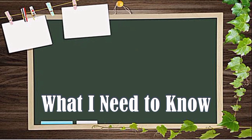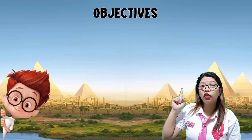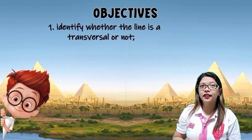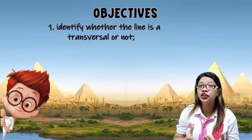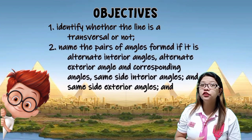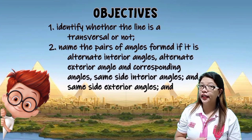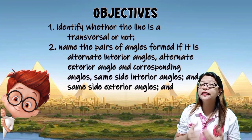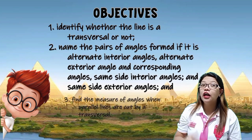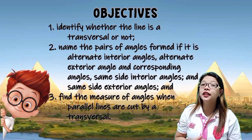What I Need to Know — here are our objectives. Number 1: Identify whether a line is a transversal or not. Number 2: Name the pairs of angles formed — alternate interior angles, alternate exterior angles, corresponding angles, same-side interior angles, and same-side exterior angles. Number 3: Find the measure of angles when parallel lines are cut by a transversal.